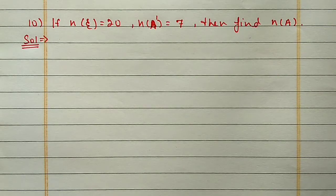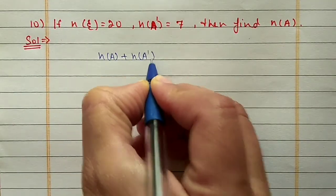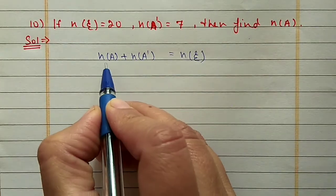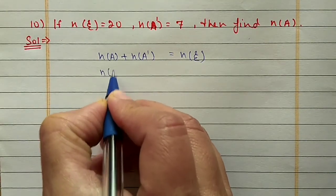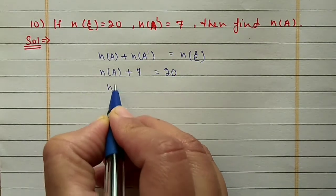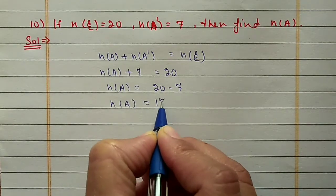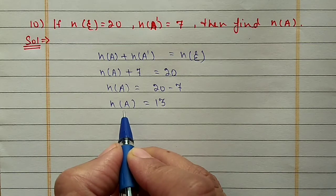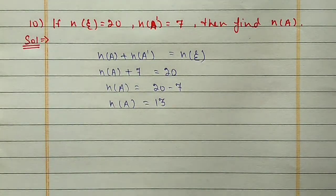Question 10: If N(U) = 20 and N(A') = 7, find N(A). Using the fifth property: N(A) + N(A') = N(U). N(A') is given as 7 and N(U) is given as 20, so N(A) = 20 - 7 = 13. This means 13 elements are in A and 7 elements are in A complement, and together they give the universal set.